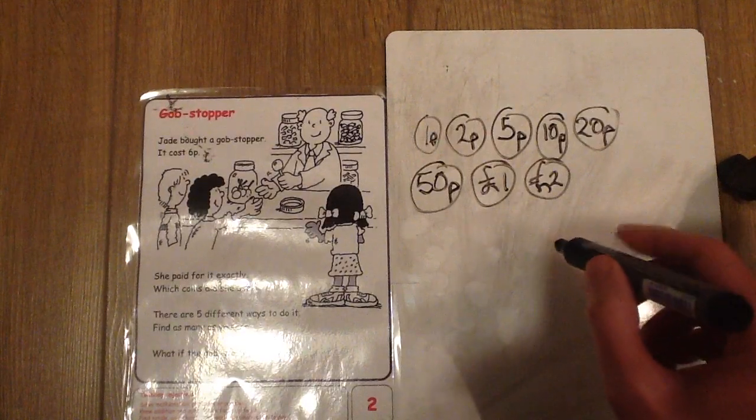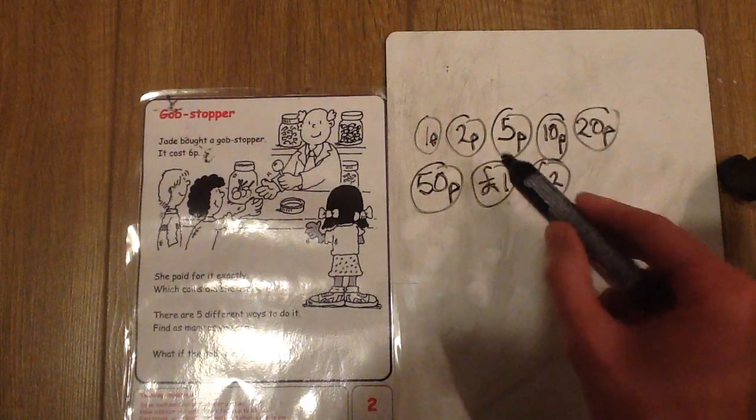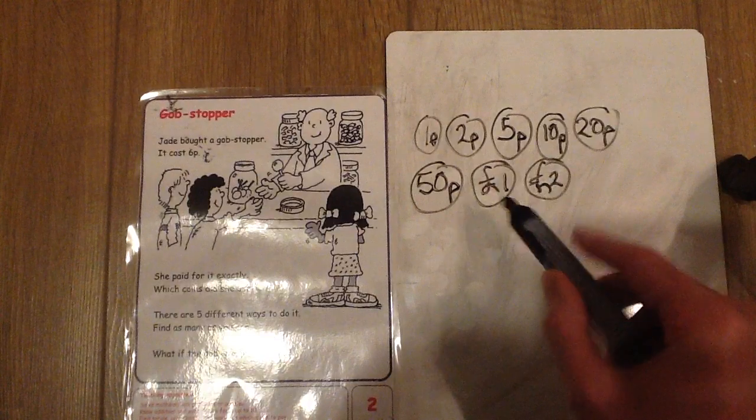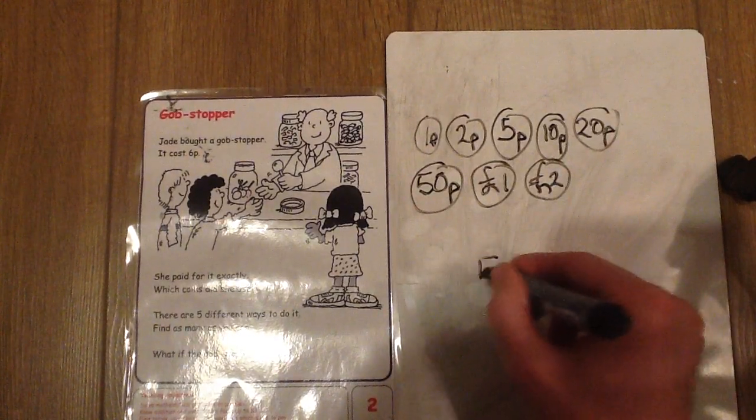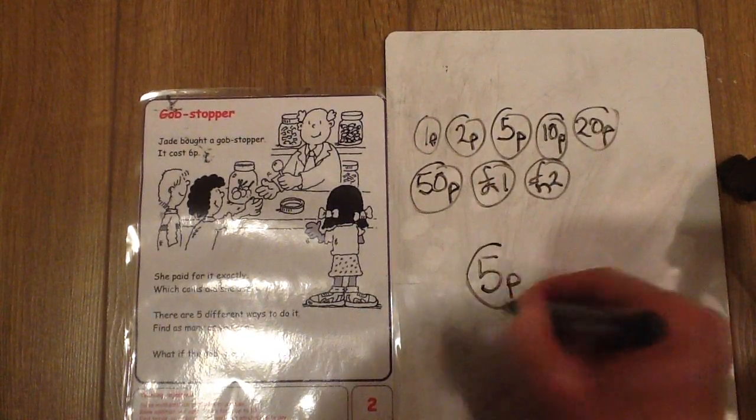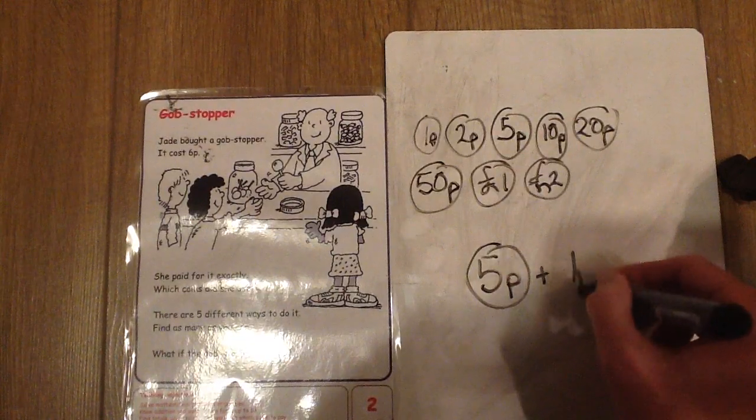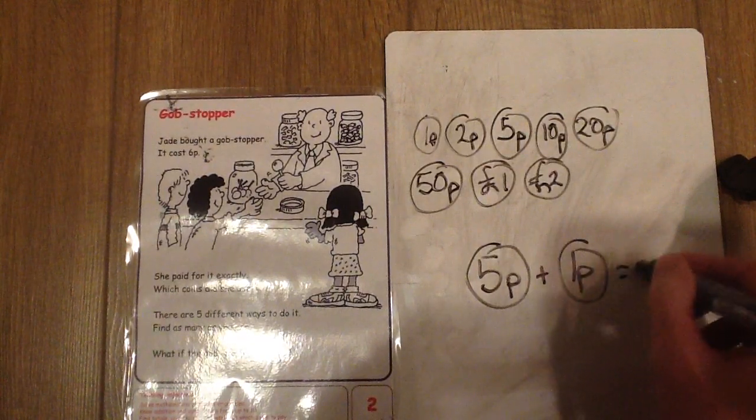Jade's Gobstopper costs 6p. So which coins can I put together to make 6p? One answer could be a 5p plus a 1p equals 6p.